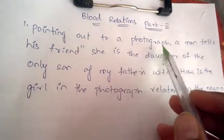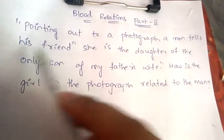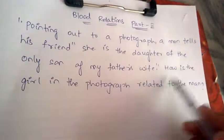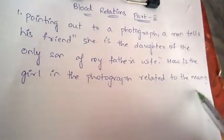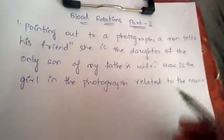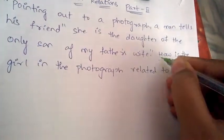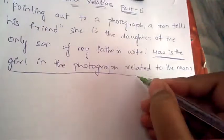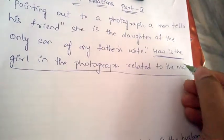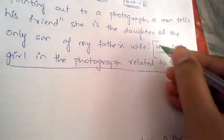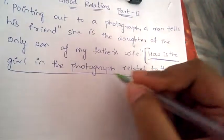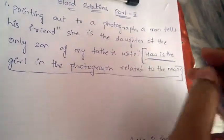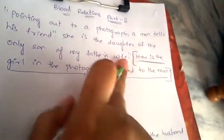Pointing out to a photograph, a man tells his friend: 'She is the daughter of the only son of my father's wife.' The question is: how is the girl in the photograph related to the man? This is the ultimate and final question — we need to find the relationship between the girl in the photograph and the man.